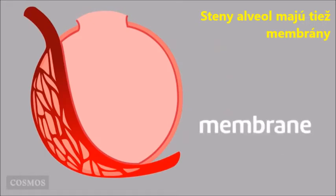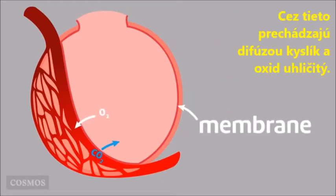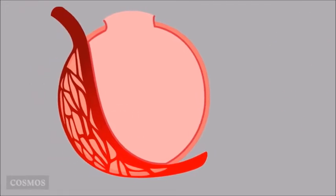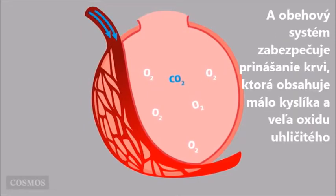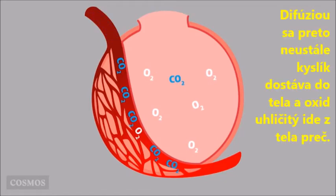The walls of the alveoli are membranes too, ones that oxygen and carbon dioxide can diffuse through. Because breathing keeps bringing fresh air into the lungs and the circulatory system keeps bringing blood that is low in oxygen and high in carbon dioxide, diffusion always acts to bring oxygen into the body and take carbon dioxide out.